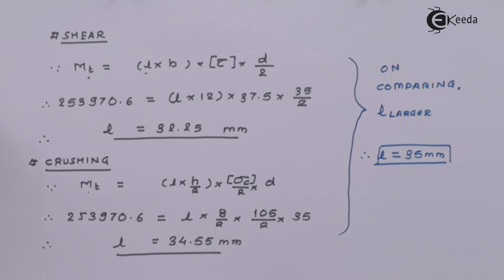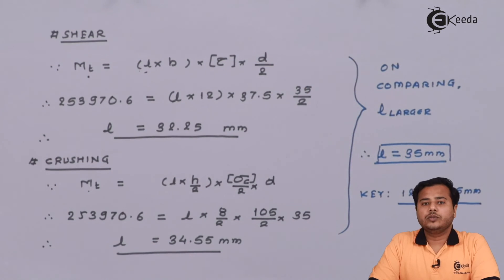The final selection of key can be said to be 12×8×35 millimeter as the standard part of coupling. That was from my side in the first section of this numerical, where we have found out shaft diameter based on which we have selected the key also. In the next subsequent part, we are going to select a standard rigid coupling and based on which we will prove that the bolts selected are safe or not. Thank you for watching this video. If you like this video, please subscribe to Ikeda.